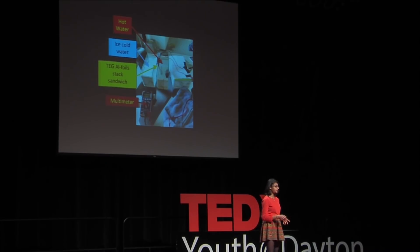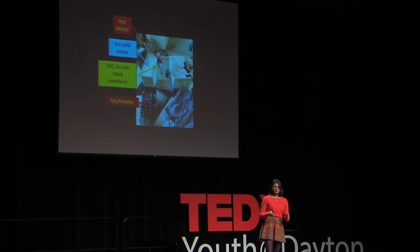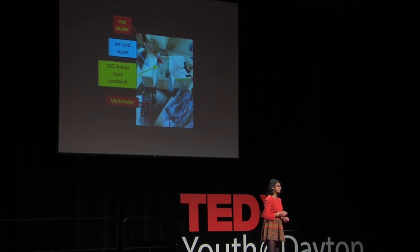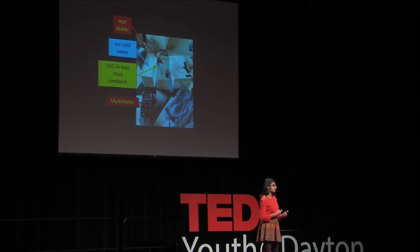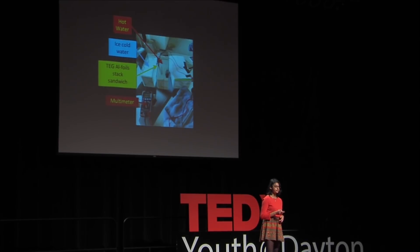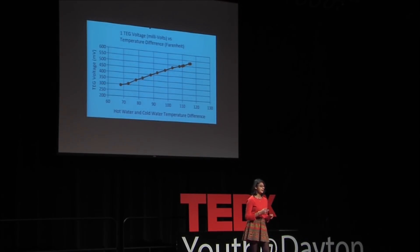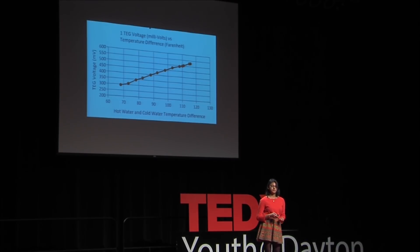Now that we've gotten through the technical portions of the TEG, let's get on to the fun stuff — the experiments. In this picture, you will see two water containers, one filled with hot water and one filled with cold water. There are also aluminum foil stacks placed in the water containers, and the TEGs are sandwiched between the aluminum foil stacks. I completed multiple experiments with this setup to analyze how the temperature difference between the hot and cold water was affecting how much voltage and current I was able to produce. I realized that as the temperature difference increased, the amount of voltage and current I was producing also increased.